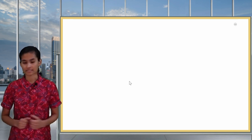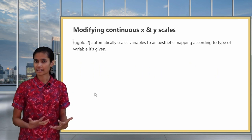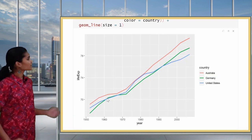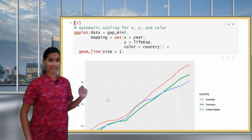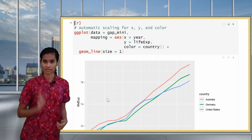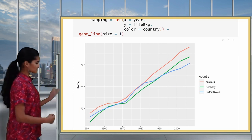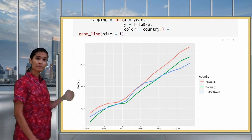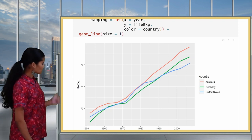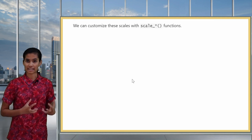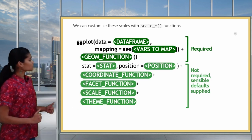Next we're going to look at scales. Whenever we add aesthetic mappings in ggplot, it will automatically scale the variable to fit the aesthetic. For example, when continuous variables are mapped to x and y, ggplot automatically scales a continuous axis — it looks at the minimum and maximum values and divides the scale accordingly. To customize x and y scales or any scales in ggplot, we use the scale family of functions.